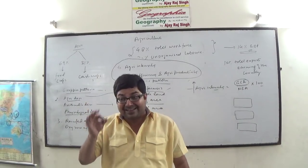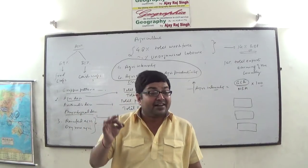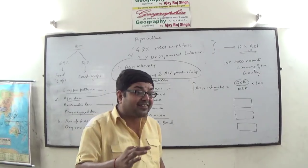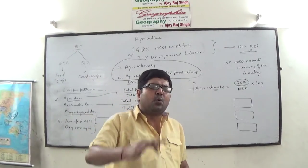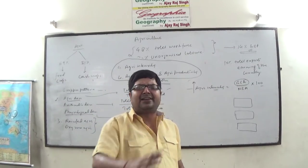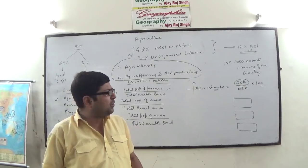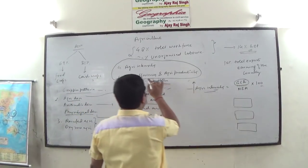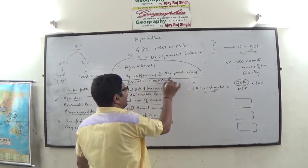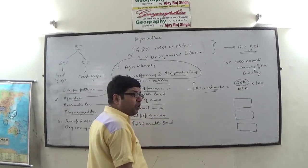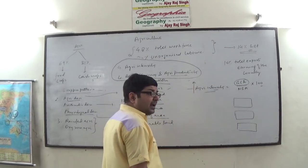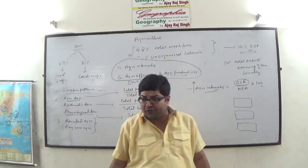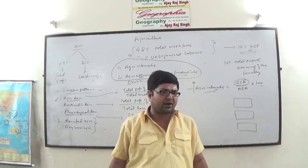If you are raising multiple crops from the same land, it will increase agricultural intensity, agricultural efficiency, and agricultural productivity. Why in India is it not high? Why are agricultural intensity, efficiency, and productivity low? These are the factors that determine why the yield of agriculture in India is poor.